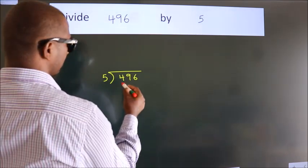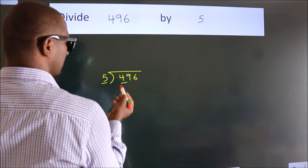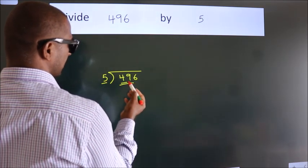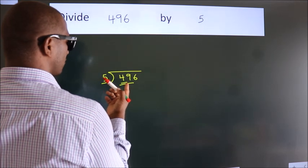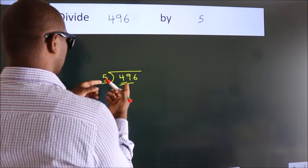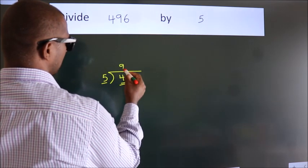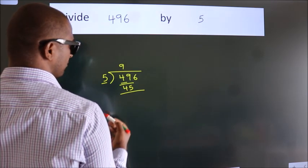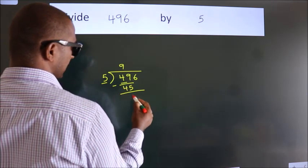Here we have 4. Here 5. 4 is smaller than 5, so we should take two numbers: 49. A number close to 49 in the 5 table is 5 nines, 45. Now we should subtract. We get 4.